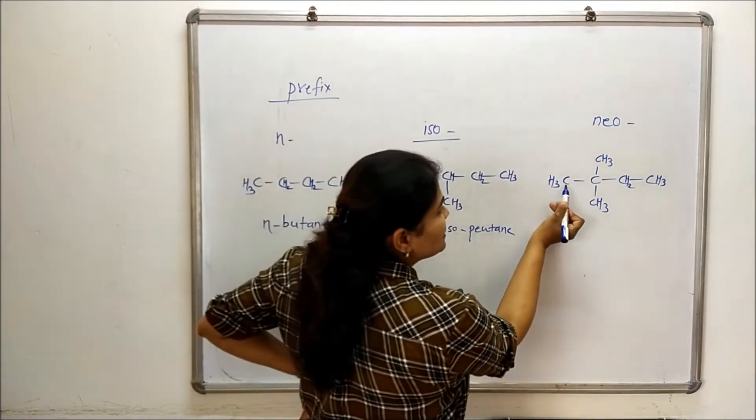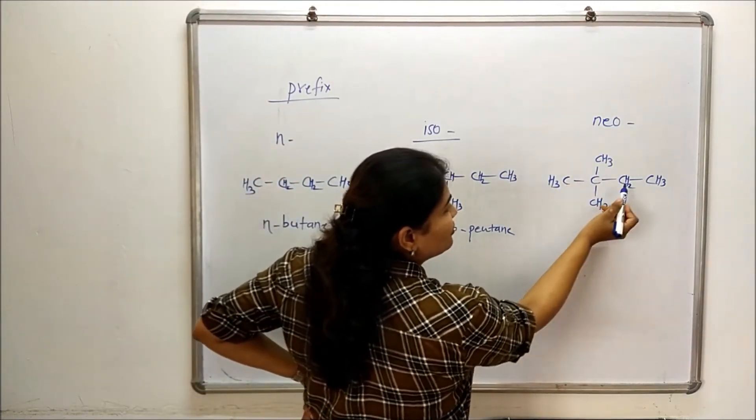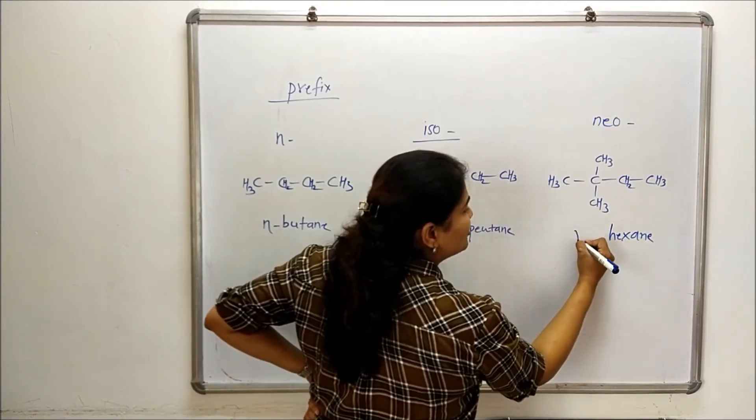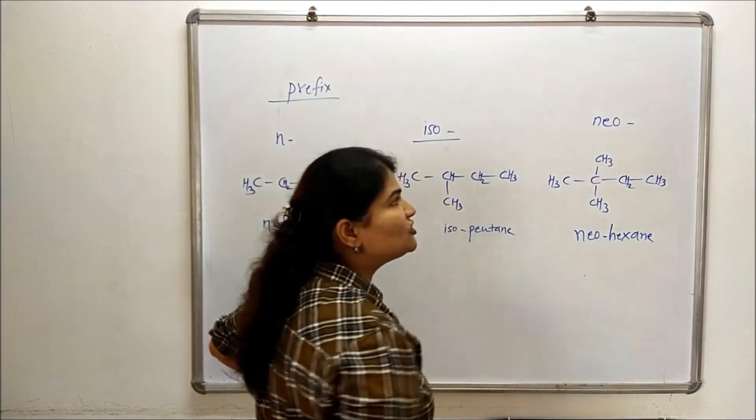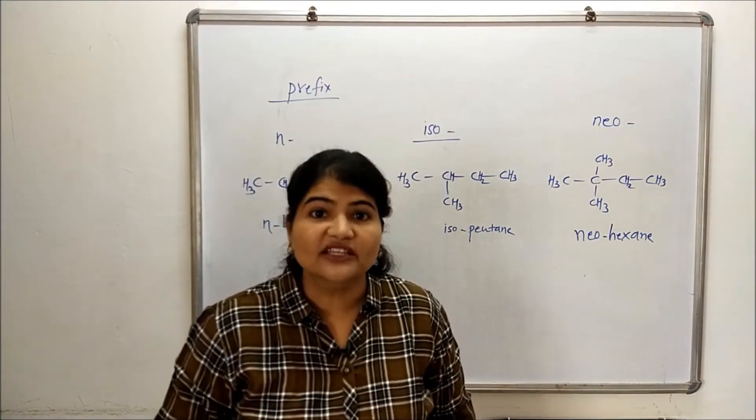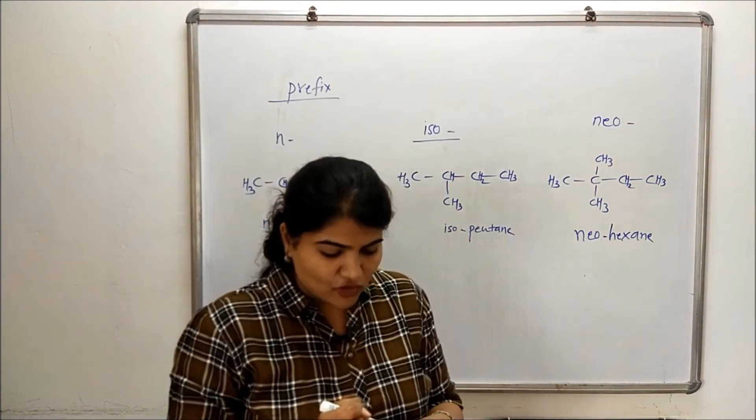If I have to name this, just count the carbons 1, 2, 3, 4, 5, 6. So hexane will be my parent and I'll put neo as the prefix. This is how n, iso and neo are the prefixes used in common names.